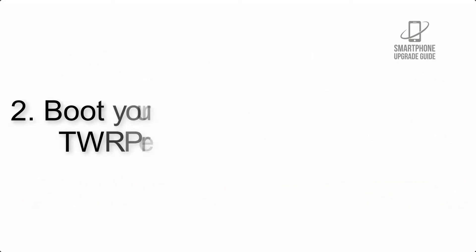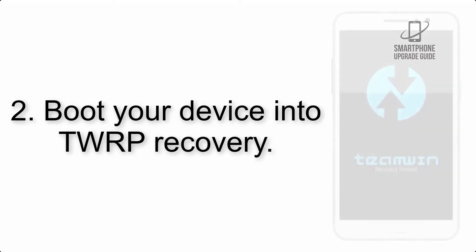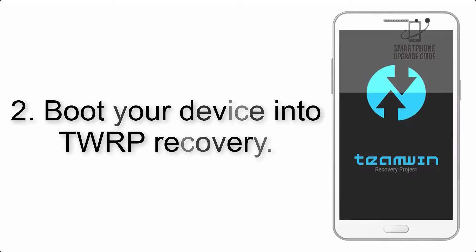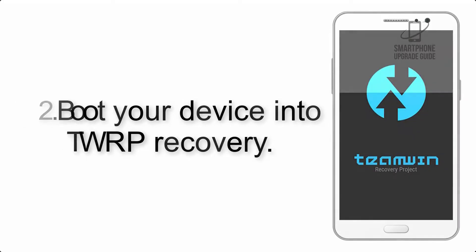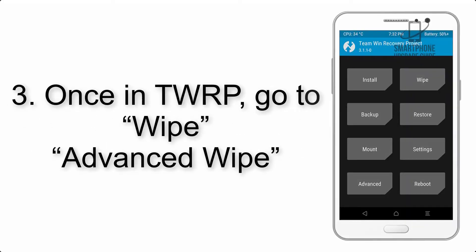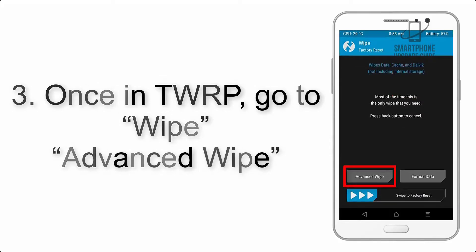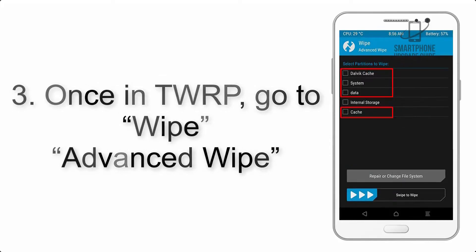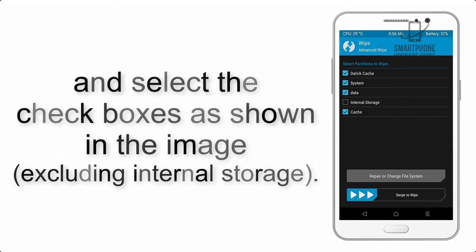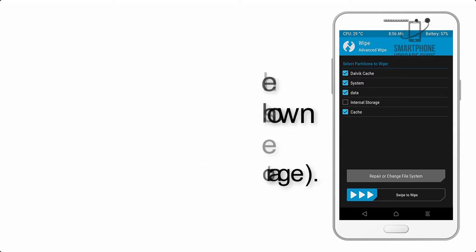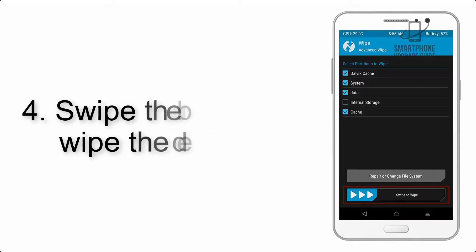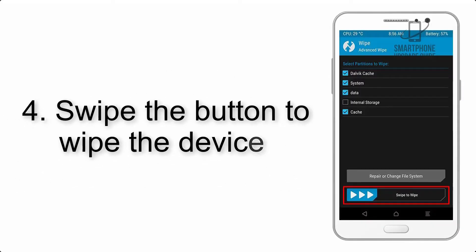Step 2: Boot your device into TWRP recovery. Once in TWRP, click on Wipe, then Advanced Wipe, and select the checkboxes as shown in the image, excluding internal storage.